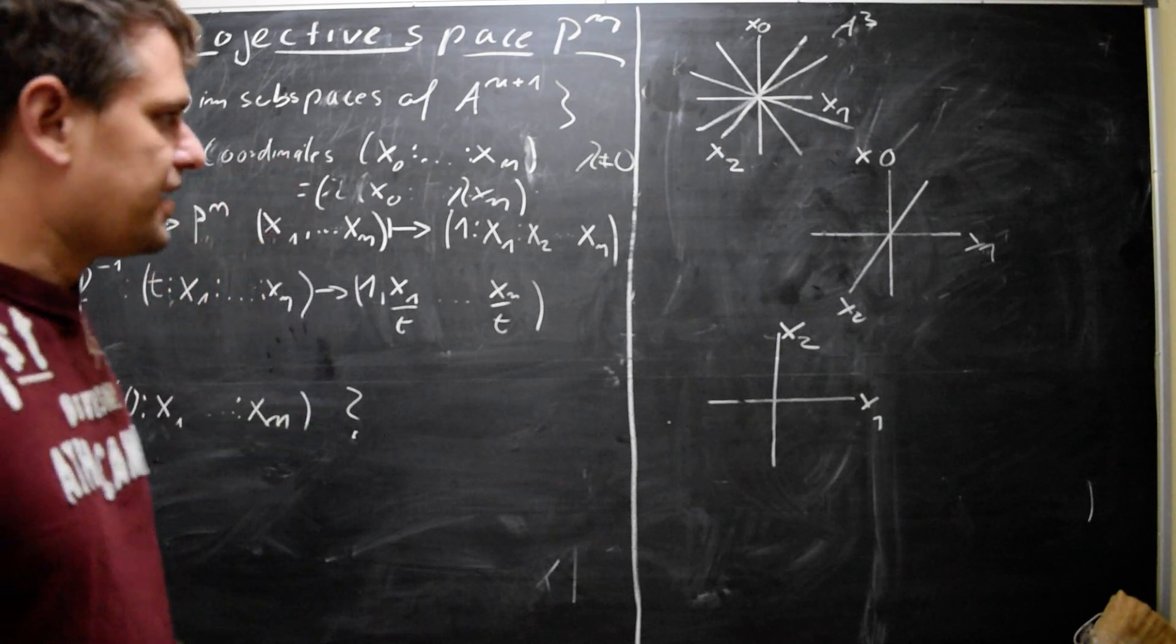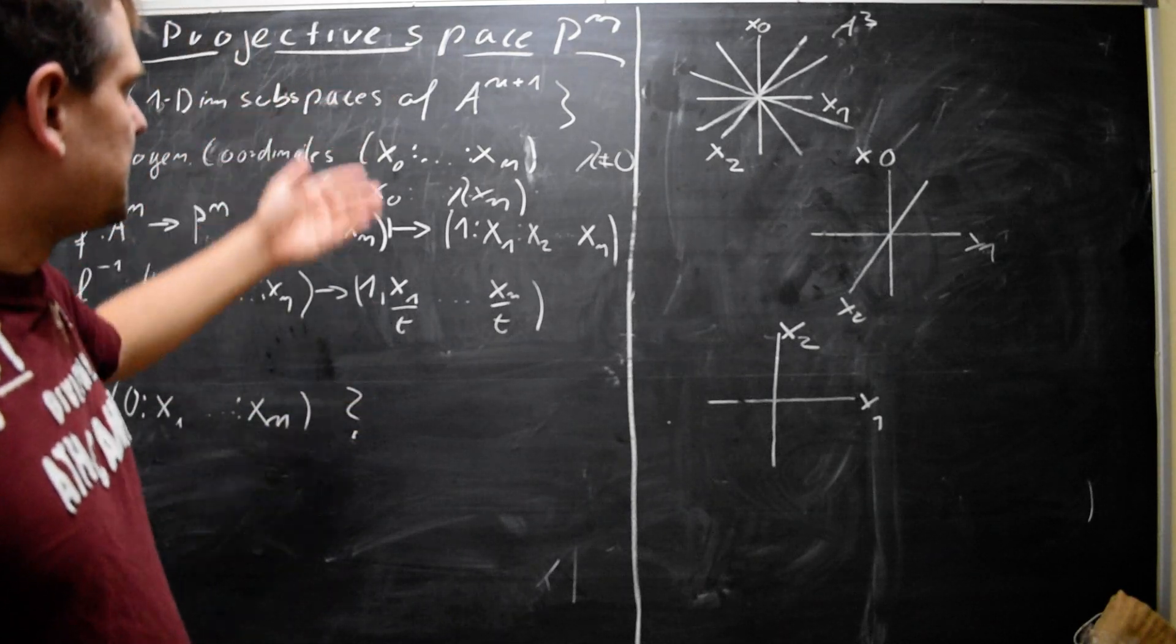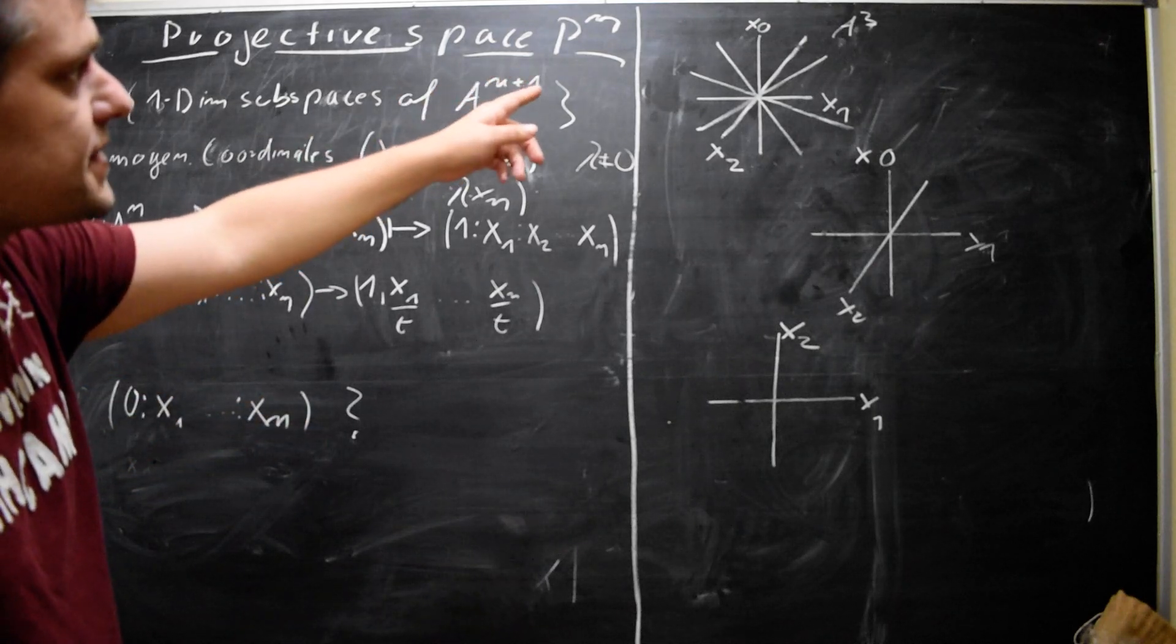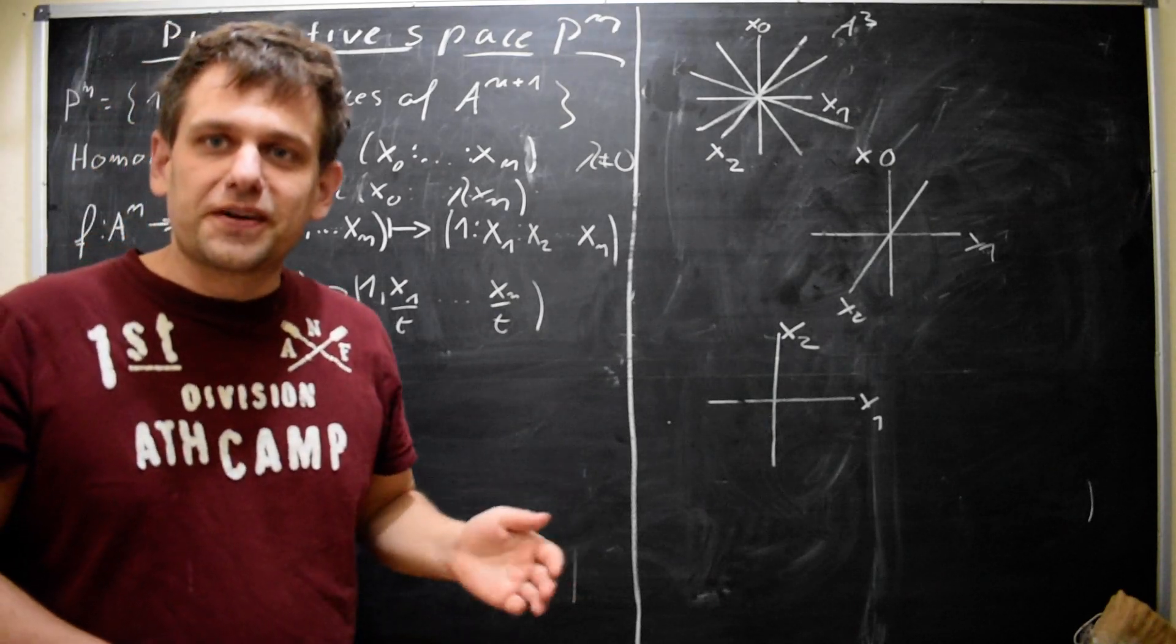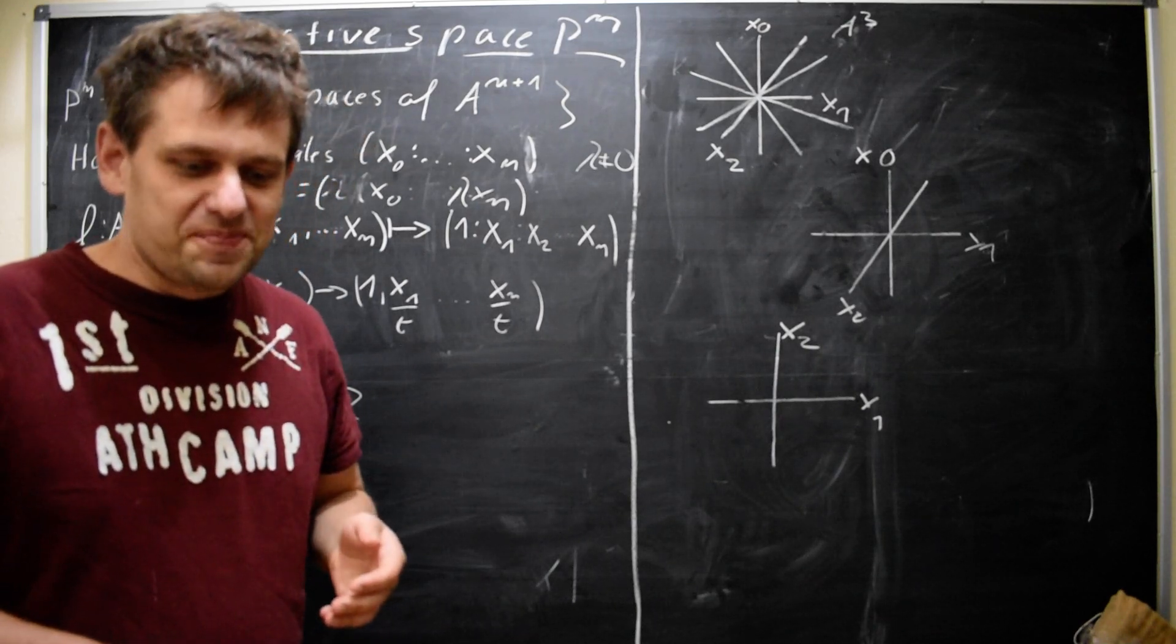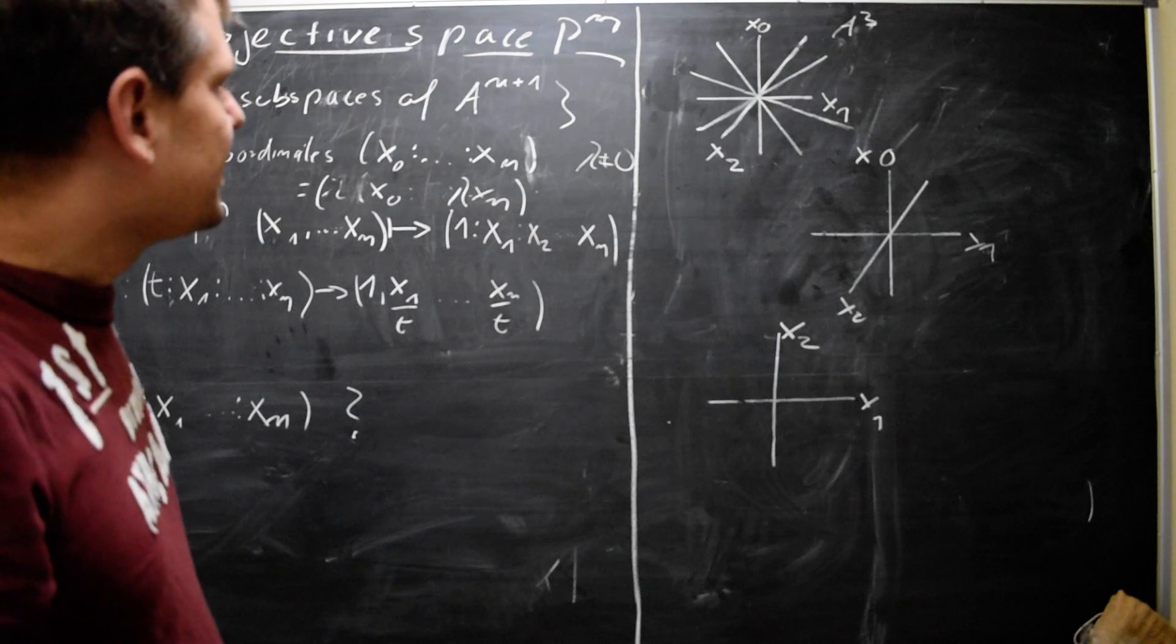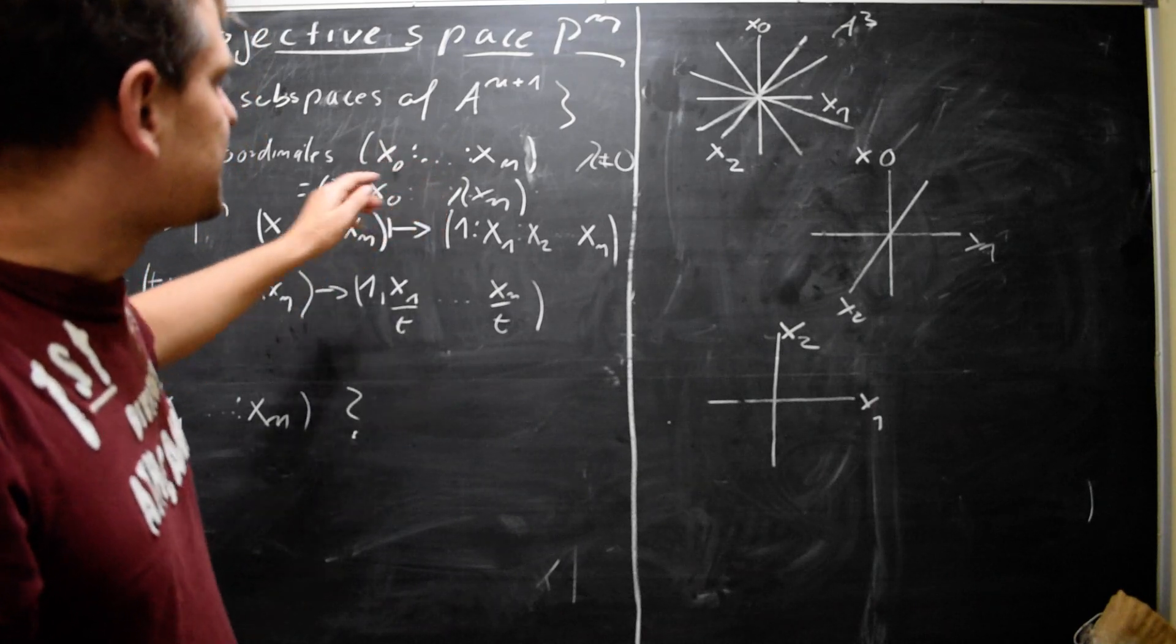And, well, for the higher dimensional case, you have to resort to that definition because we cannot draw this anymore, obviously. And now we can endow this projective space with a set of coordinates. And these coordinates are called homogeneous coordinates.